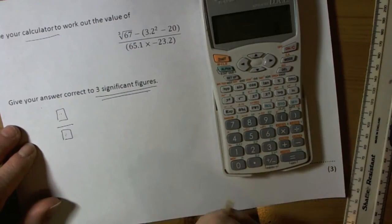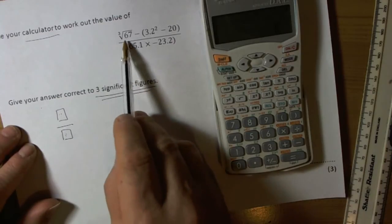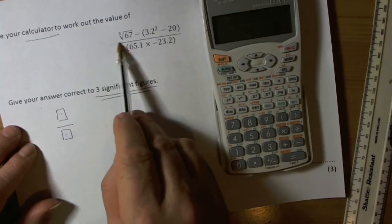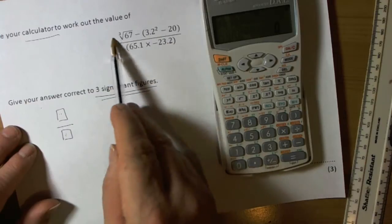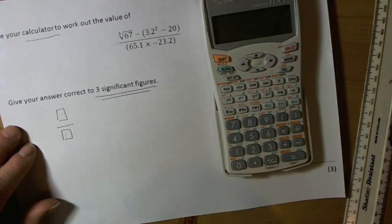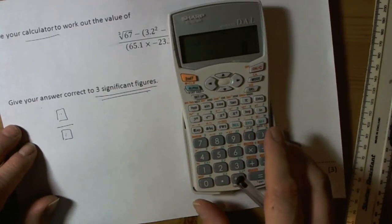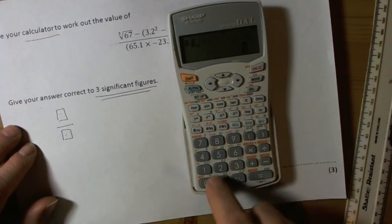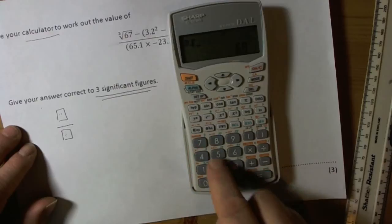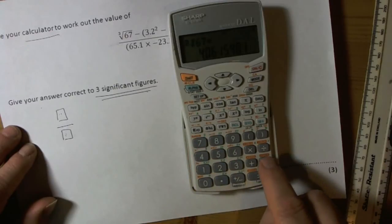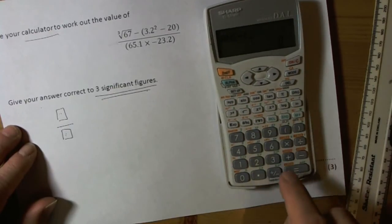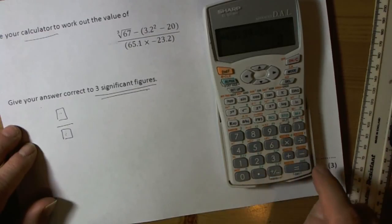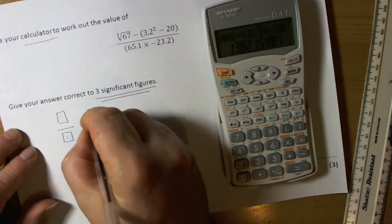So BIDMAS says technically the divide would be fairly high up the list and would be done first. We've got to be careful here, so the best way to do this is to do the top part of this fraction. So we find our cube root key, which on this calculator is in orange, so second function, cube root 67, press equals, take away bracket 3.2, press our squared key, take away 20, close our bracket, equals. So the top part of our fraction is 13.8215481.